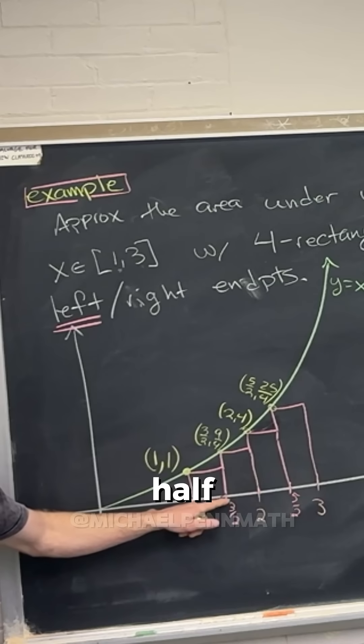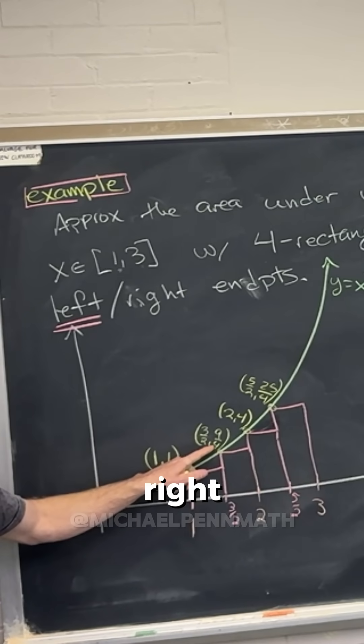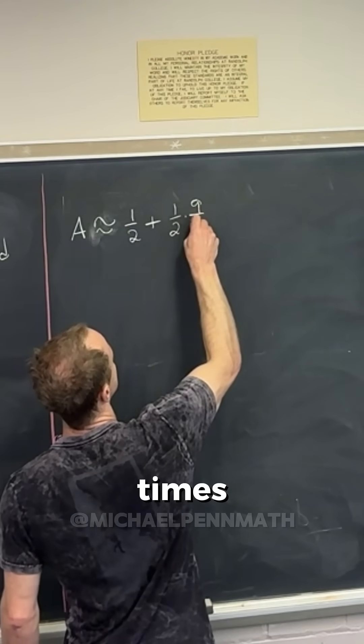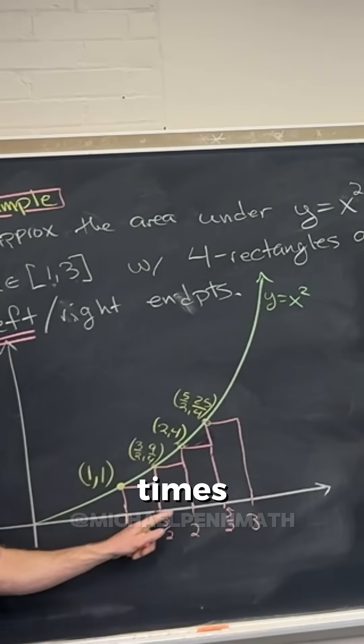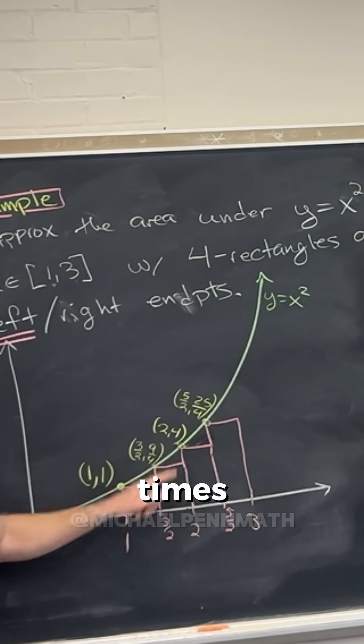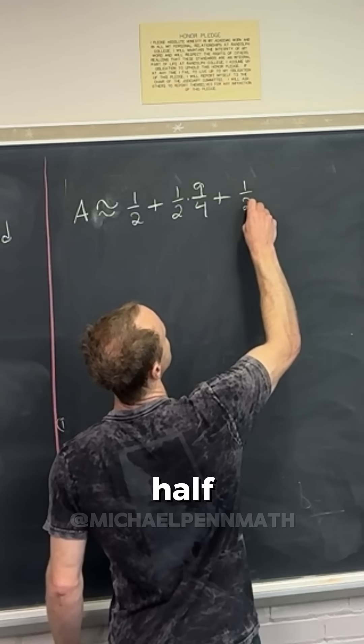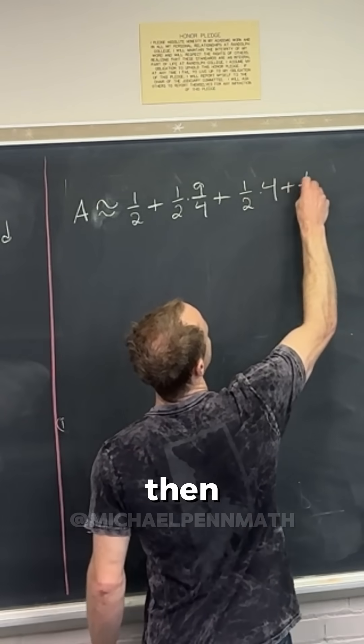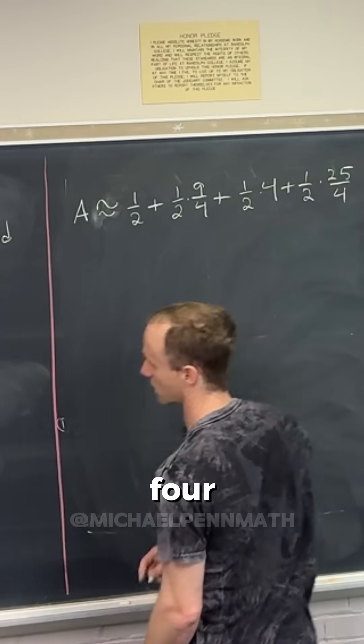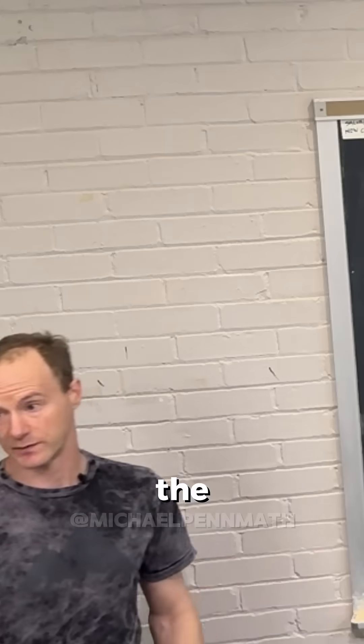Then the area of the second one is, well, it's a width of a half and a height of nine quarters, right? So plus a half times nine quarters, base times height. Then the third one, base times height, that's going to be a half times four. So a half times four, and then finally a half plus 25 over four, right, base times height.